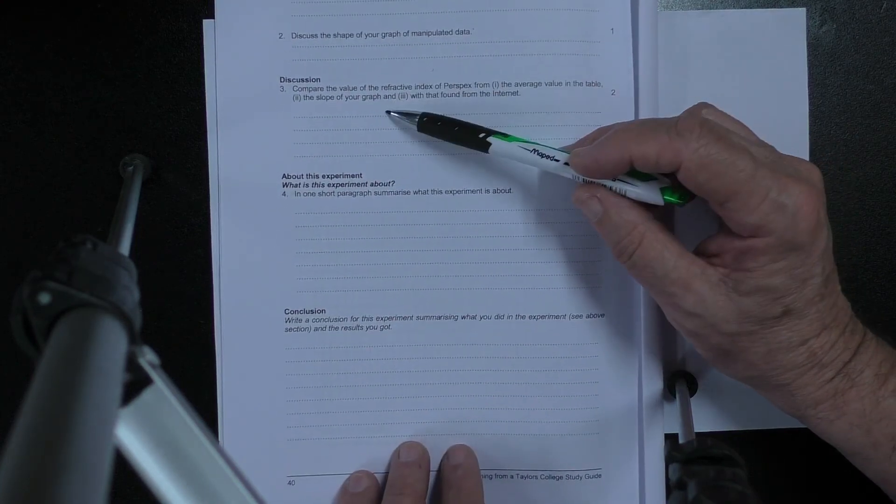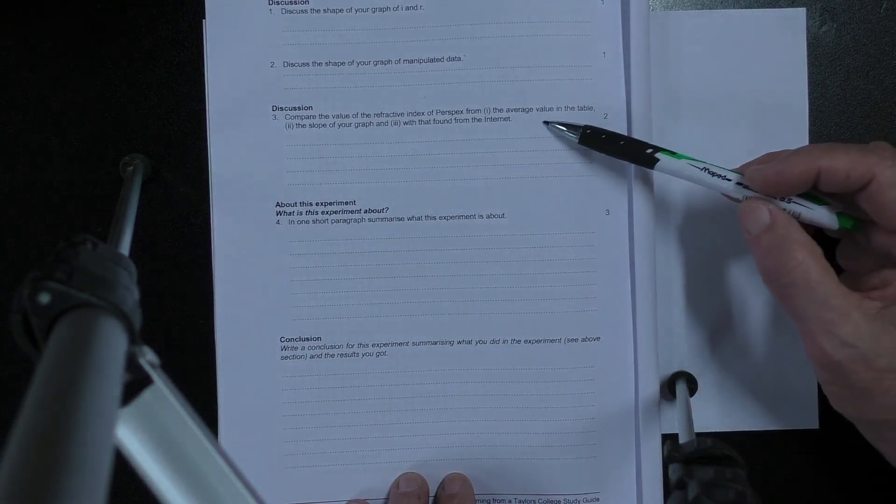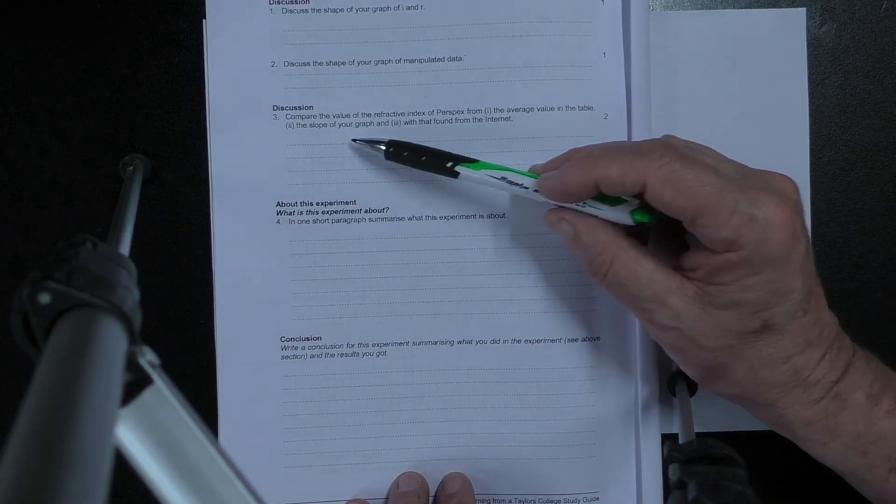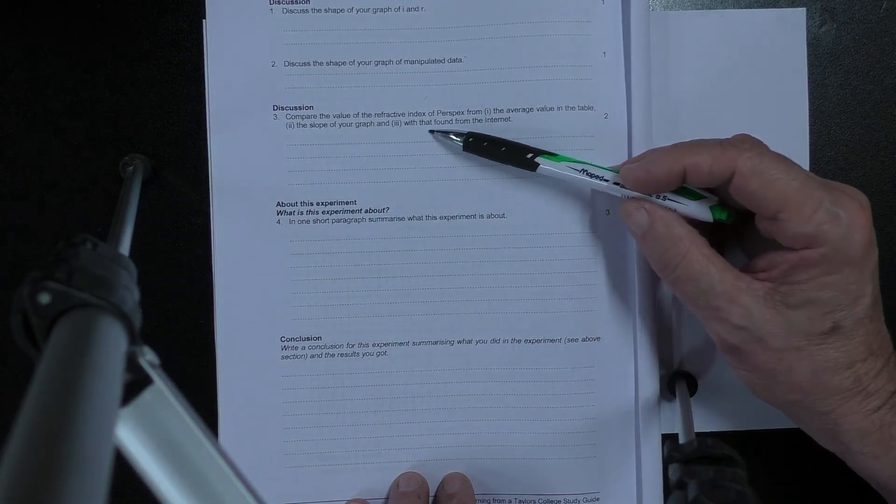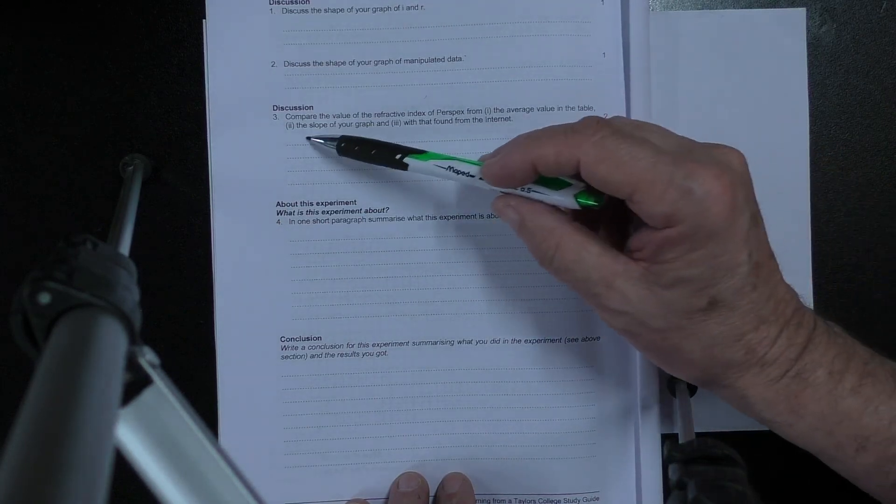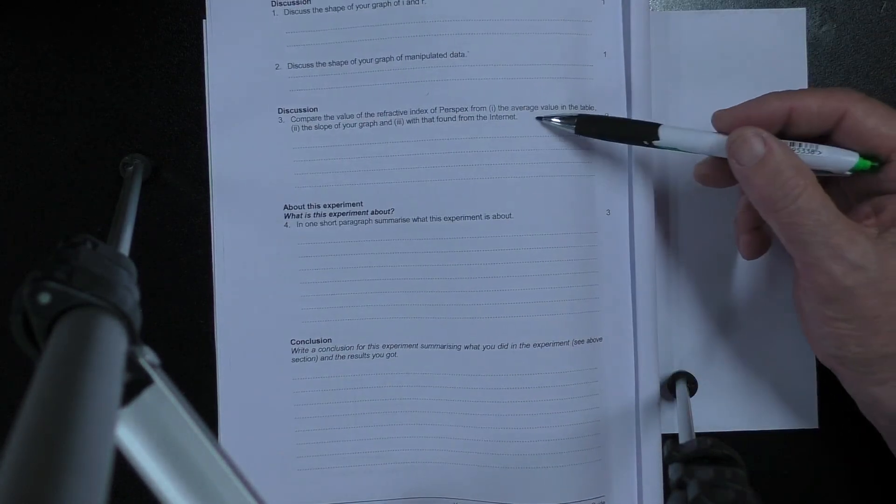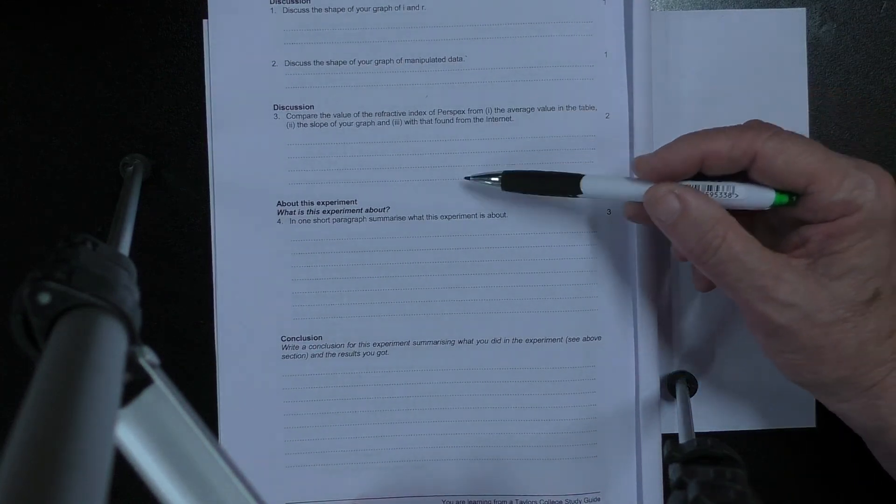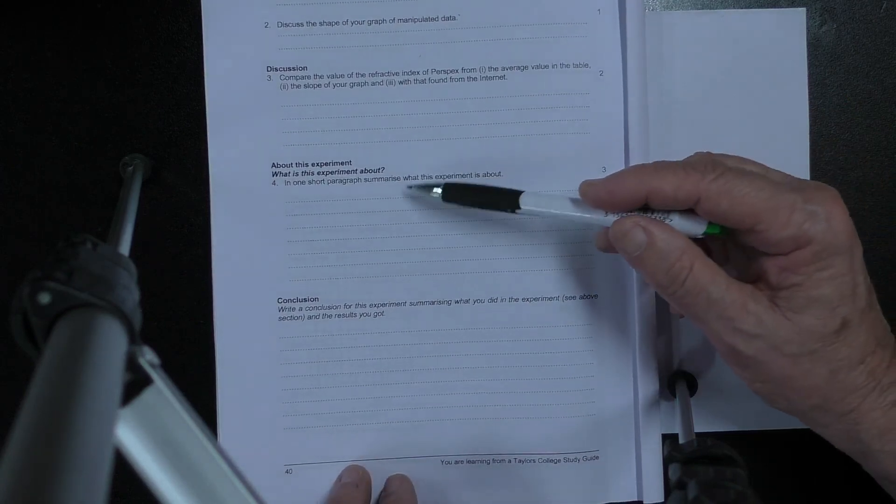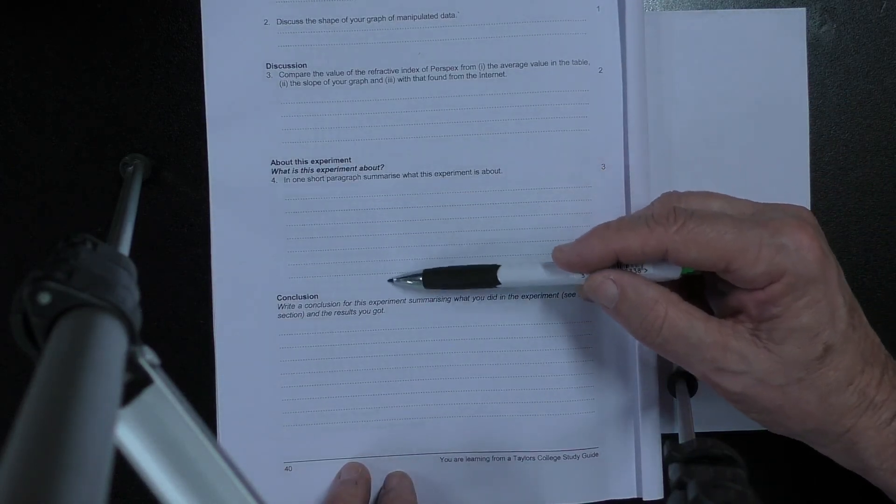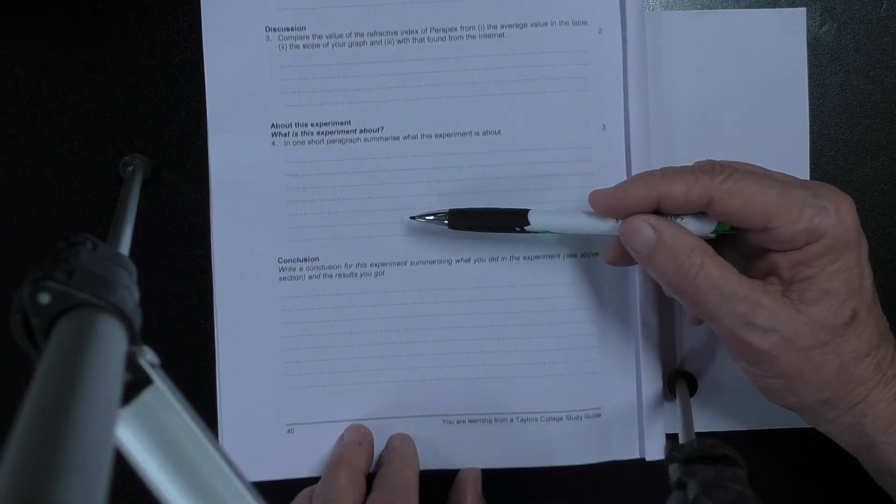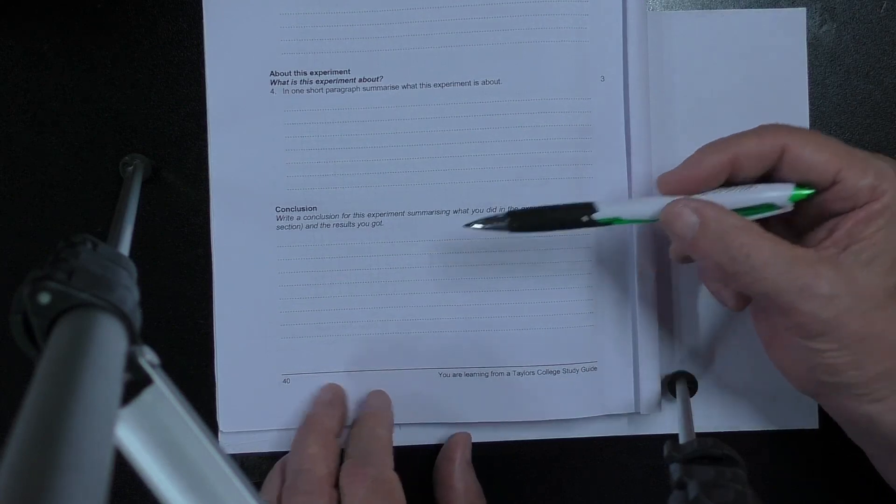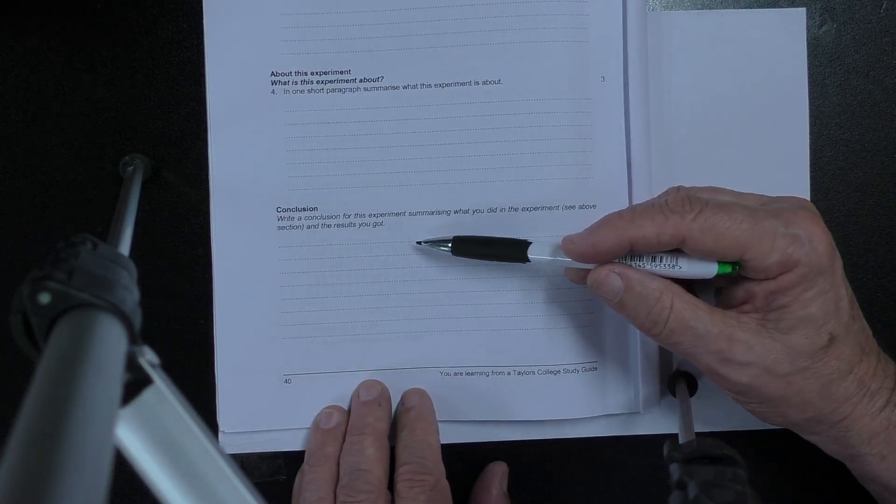Then it says compare the value of the refractive index of perspex from your average values of the table to the slope and with that found on the internet. So what you've got to do here is go to the internet to find the answer there. This one comes from your graph and this one comes from your table. So that's basically it and that should put you in a position where you can fill out this paragraph and summarize a conclusion or write a conclusion.